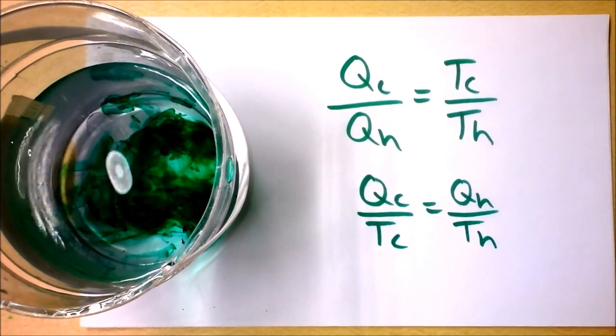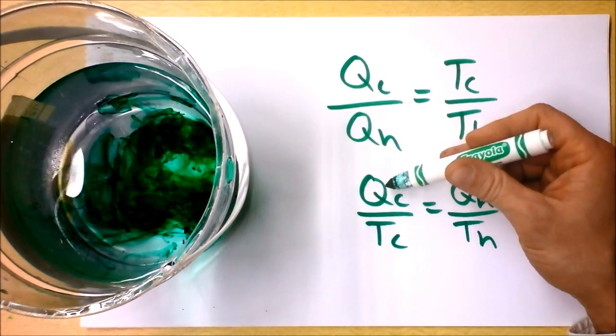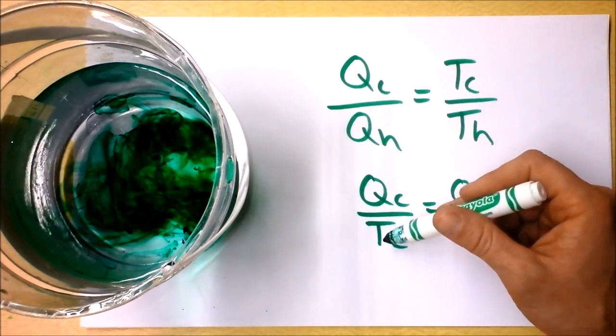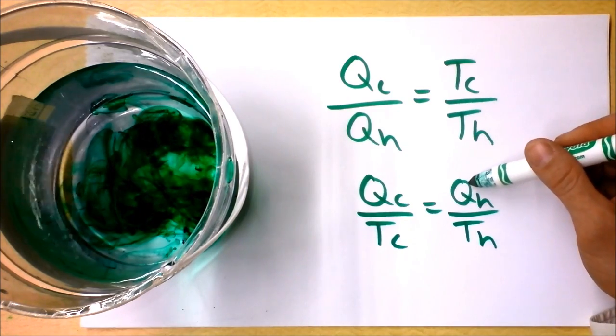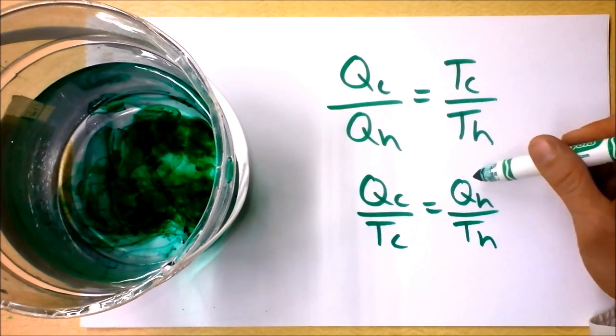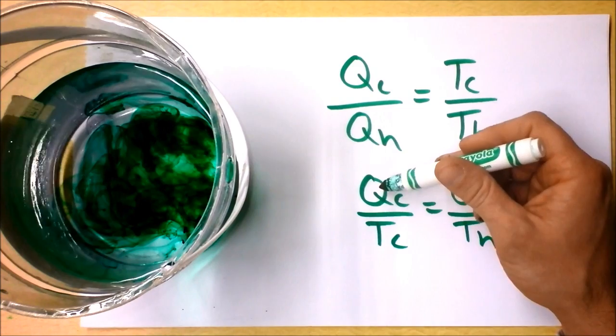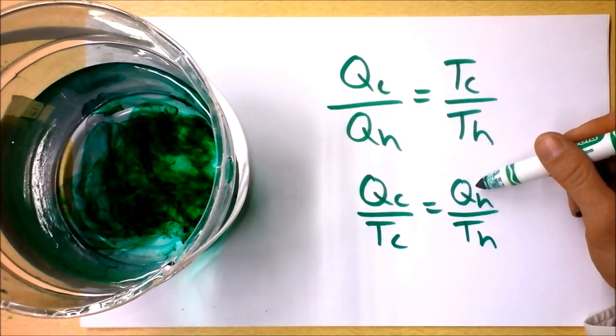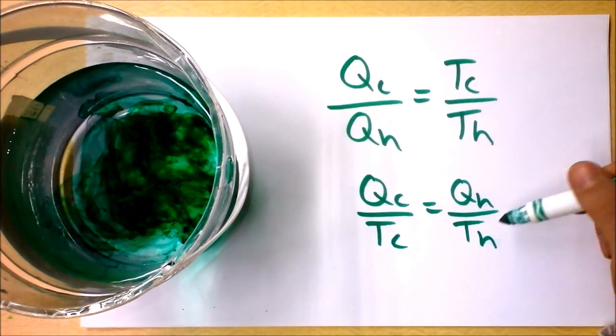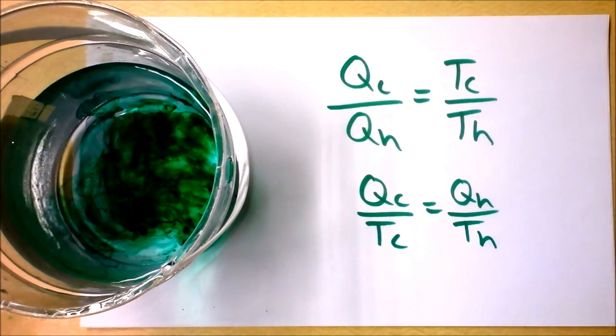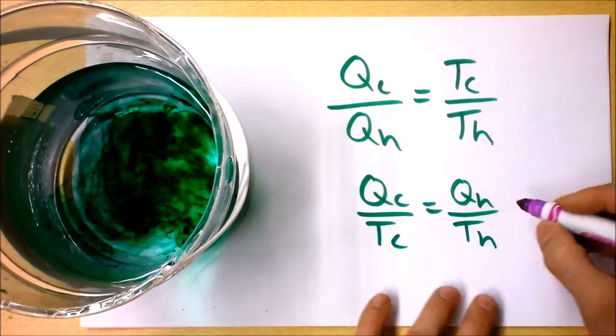Let's take a moment and talk about what this means. This means the heat leaving the cold reservoir divided by the temperature of the cold reservoir has to equal the heat leaving or entering... oh, sorry. This is the heat entering the cold reservoir. This is the heat leaving the hot reservoir divided by the temperature of the hot reservoir.